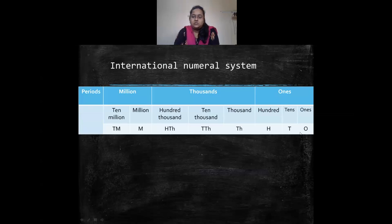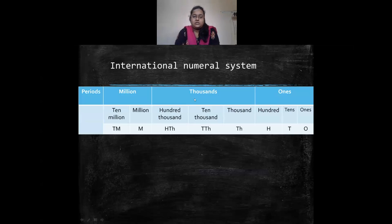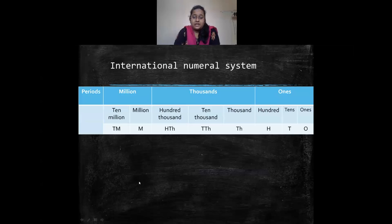In the International numeral system we have ones, tens, hundreds, thousands, and ten thousands — similar to the Indian system. After ten thousands, instead of lakhs, the International system has hundred thousands. One lakh in the Indian system equals one hundred thousand in the International system.